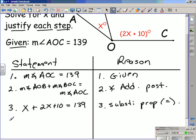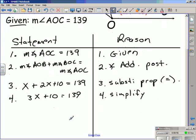The next statement would be 3x plus 10 is equal to 139. And all we did was simplify the equation by combining the like terms x and 2x. So the justification or the reason for statement number 4 would be simplify the equation.